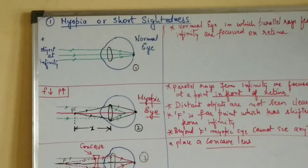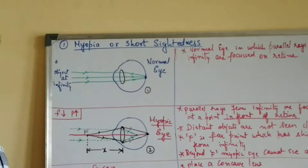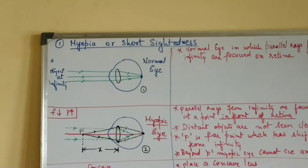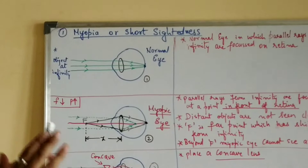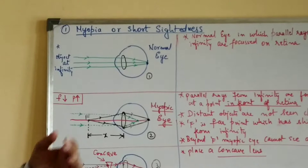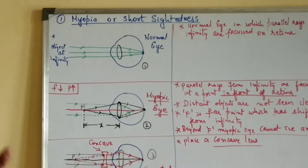Now let us go in detail with every defect of the human eye. The first was myopia or myopic eye — the eye is capable of reading and writing and visualizing nearby objects, but it is not capable of visualizing objects at a far distance. To understand this, we need to keep in mind three parameters: far point, near point, and least distance of distinct vision.